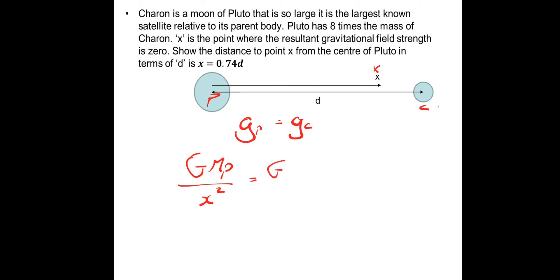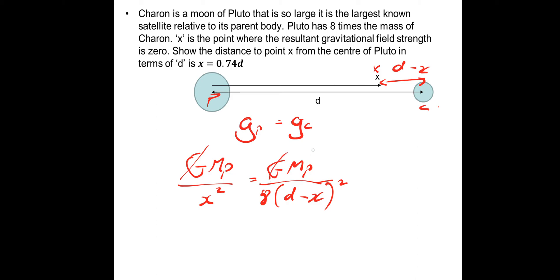Cancelling G and the mass of Pluto, then flipping both sides, we get X squared equals 8(d−X) squared. Taking the square root of both sides to avoid dealing with a quadratic: X equals √8·(d−X).